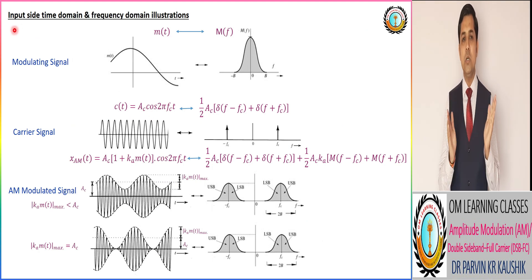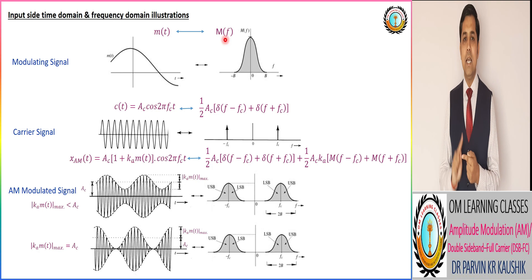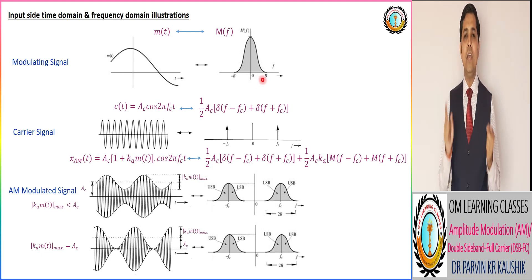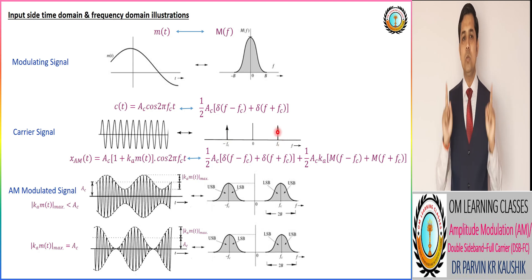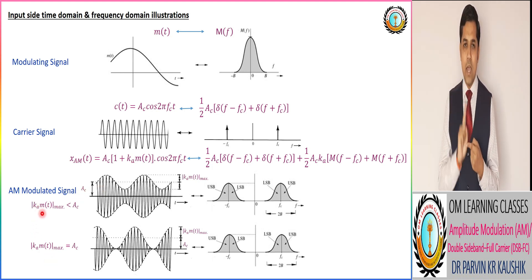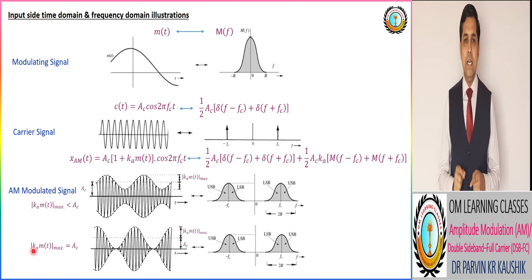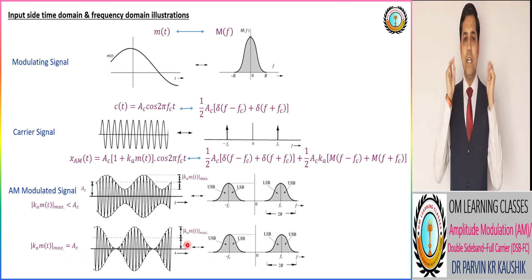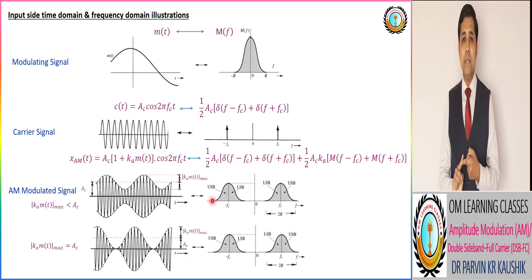The time domain and frequency domain representations are shown. The modulating signal contains a maximum frequency of fm, restricted up to fm hertz. The carrier signal Ac cos(2π·fc·t) has two impulses in the frequency domain at ±fc. For the modulated signal, two cases are considered: the first where ka·m(t) is less than Ac, and the second where ka·m(t) is equal to Ac.